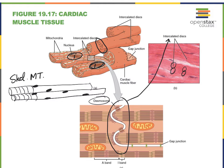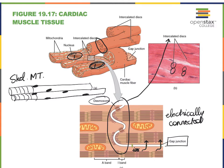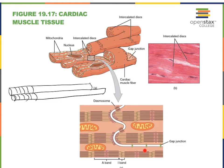But inside of these intercalated discs we also find gap junctions, and this is what really separates heart muscle from skeletal muscle, because gap junctions allow for all kinds of ions to travel from cell to cell. So ions can travel from cell one to cell two through these gap junctions. This makes heart muscle tissue electrically connected. If depolarization occurs in one cell, then because the ions forming this electrical current can move into the next cell, that leads to depolarization of the next cell. So the cells are said to be electrically connected.